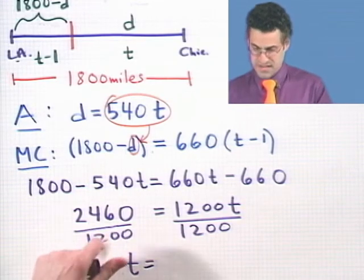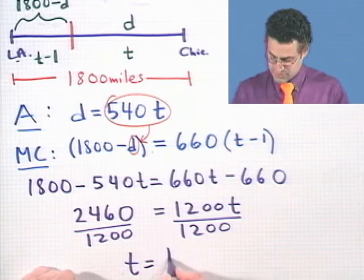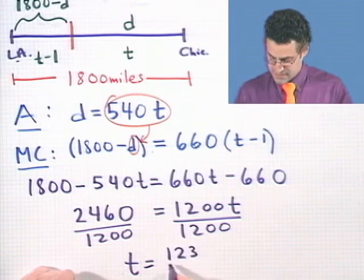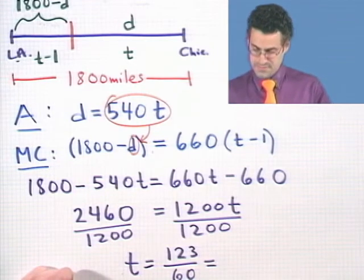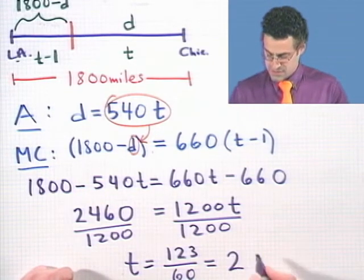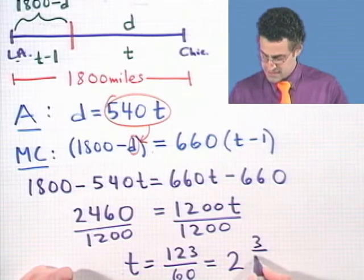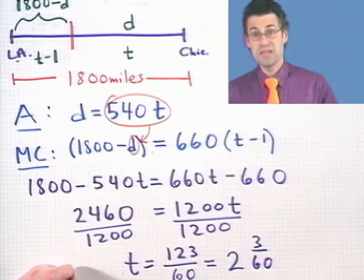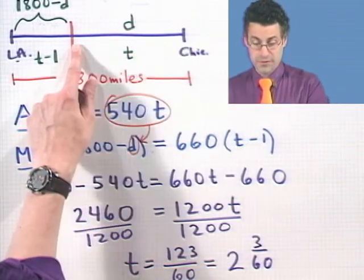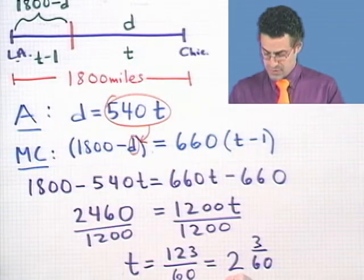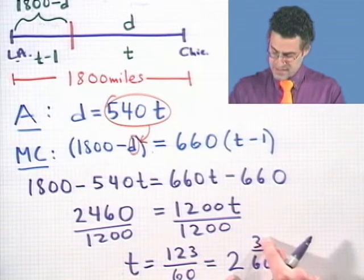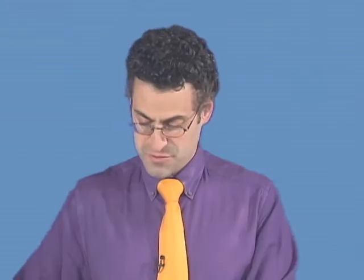And so I see that T equals, after I cancel, I see that T equals 123 divided by 60, which, if we write that out as a mixed number, turns out to be 2 and 3 60ths, which means that when do they meet from the time that Arsenio started his flight from Chicago? 2 hours and 3 60th of an hour, which is basically 2 hours and 3 minutes.